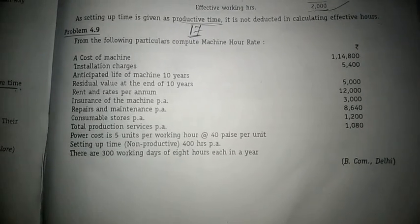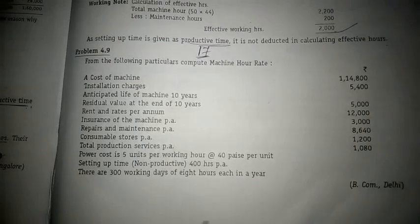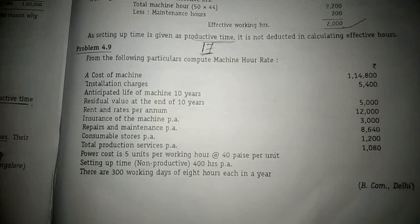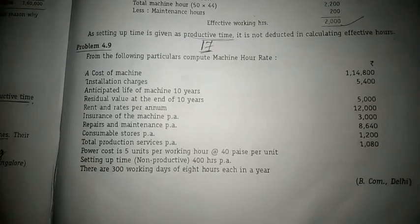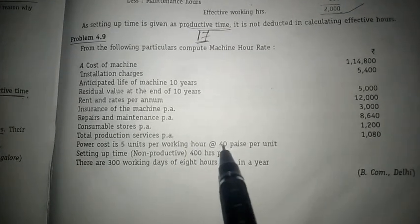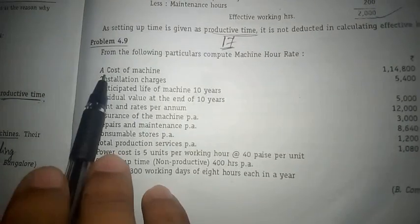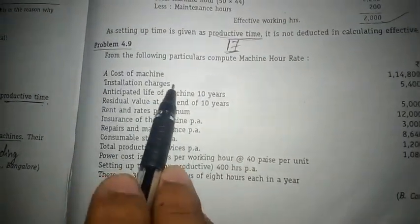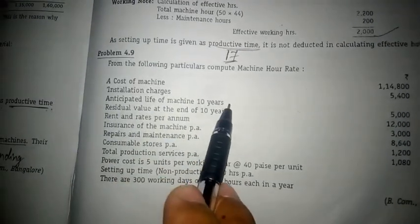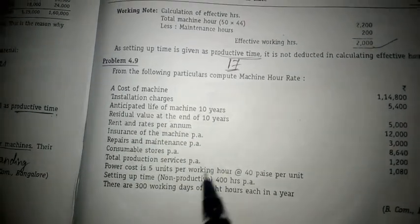In this video, let us understand how to calculate machine hour rate. Before calculating machine hour rate, the first thing we need to do is bifurcate the given expenses into standing charges and variable charges. The first information given is cost of machine, then installation charges, then anticipated life of the machine — 10 years — and residual value at the end of 10 years.